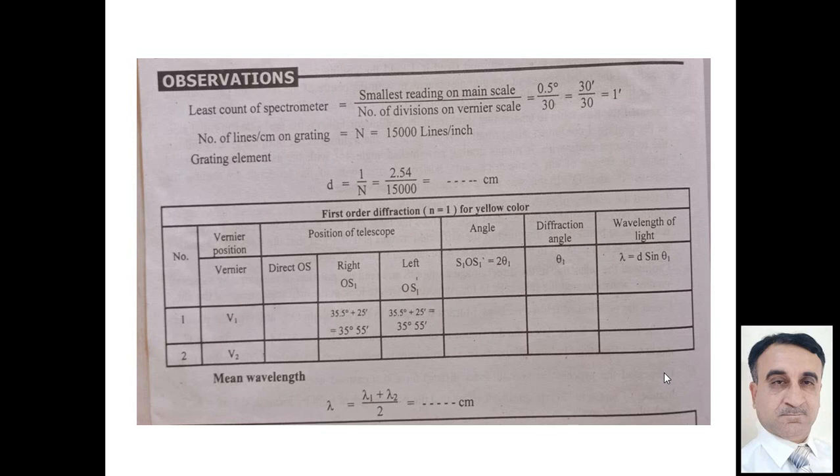Least count of spectrometer, the formula is smallest reading on main scale divided by total number of divisions on vernier scale. Smallest value reading is 0.5 degree.